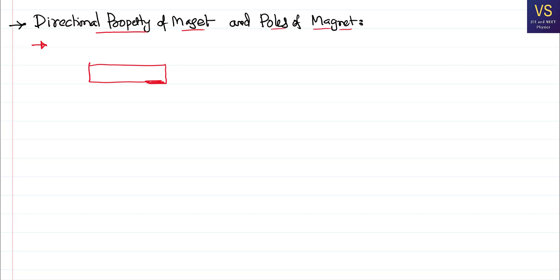This magnet has the ability to attract. It can attract materials like iron, steel, cobalt, and nickel. The ability of attraction for each material could be different — how much they are being attracted — but they are all being attracted.